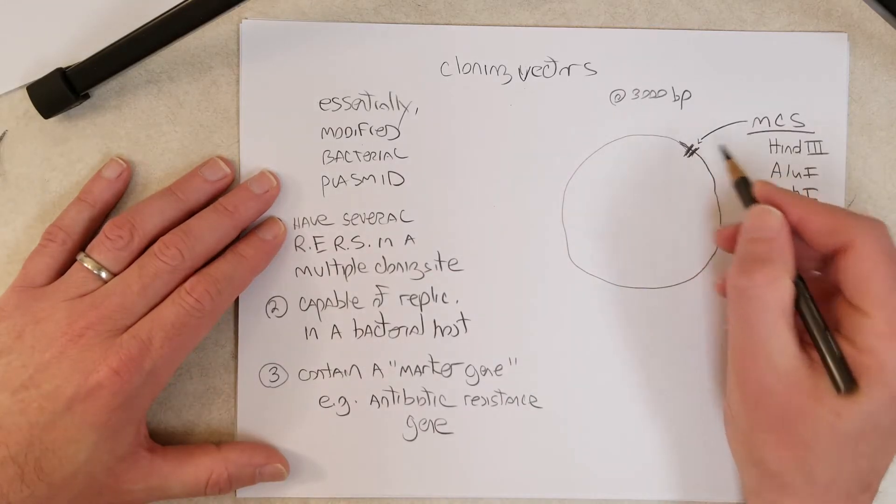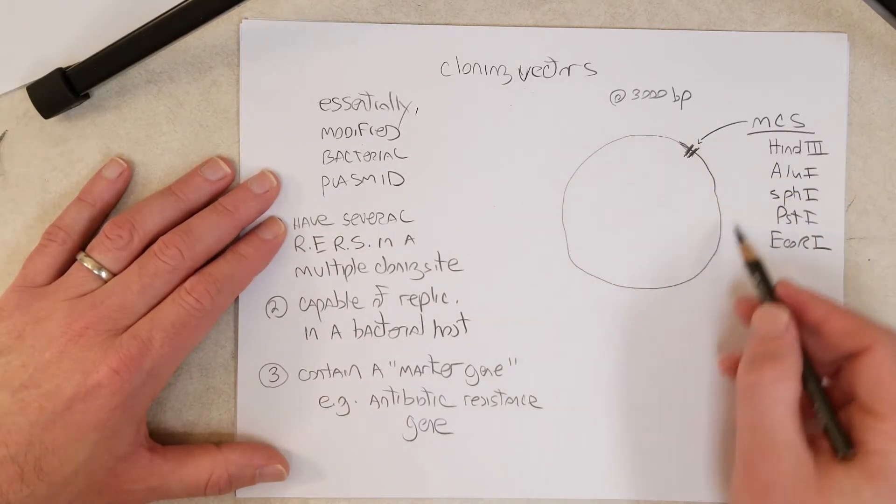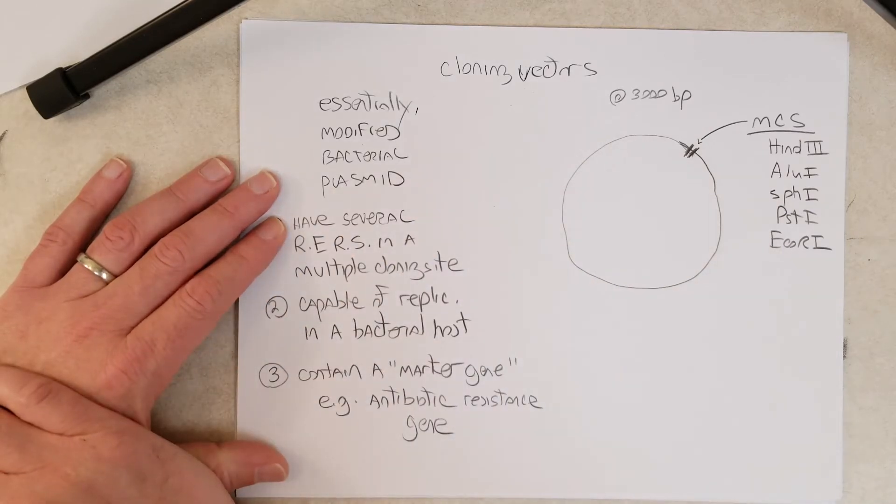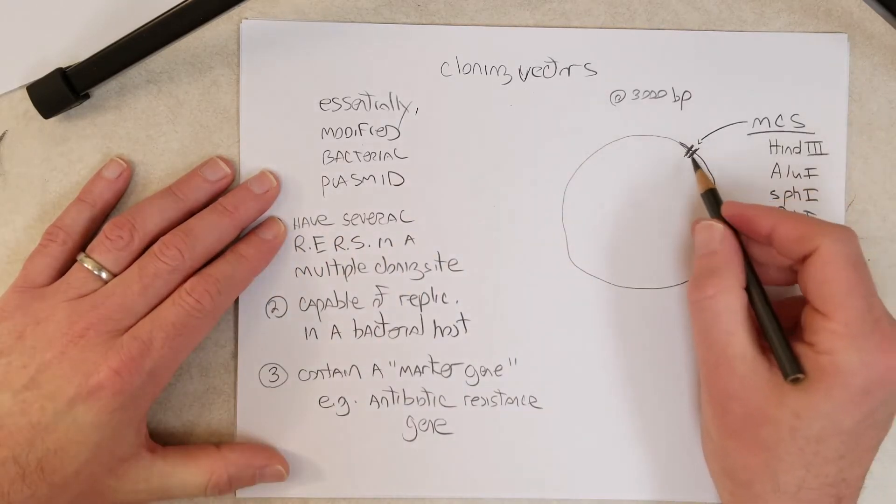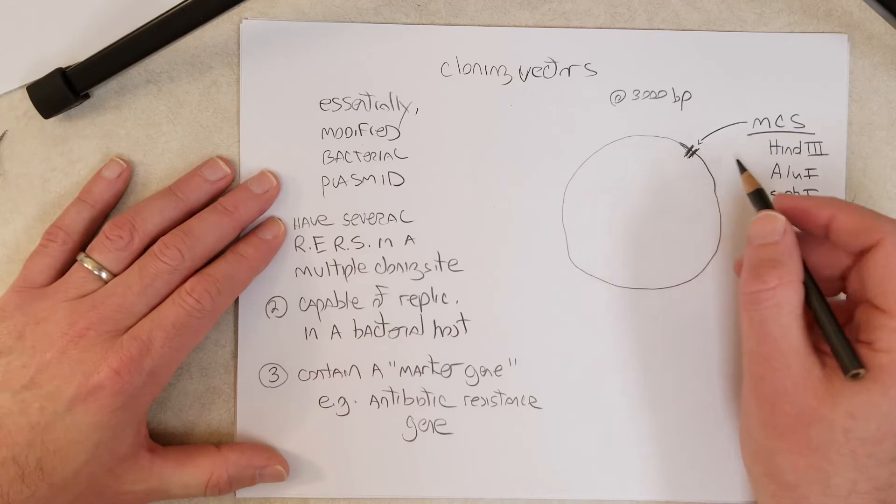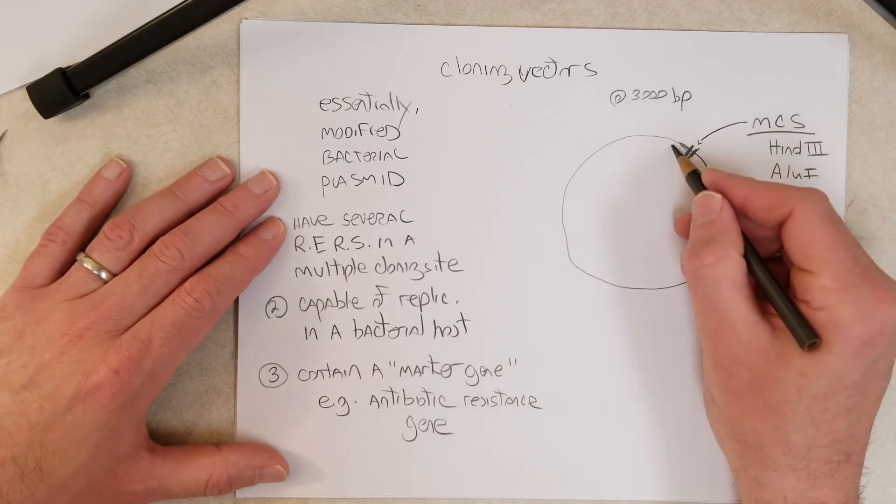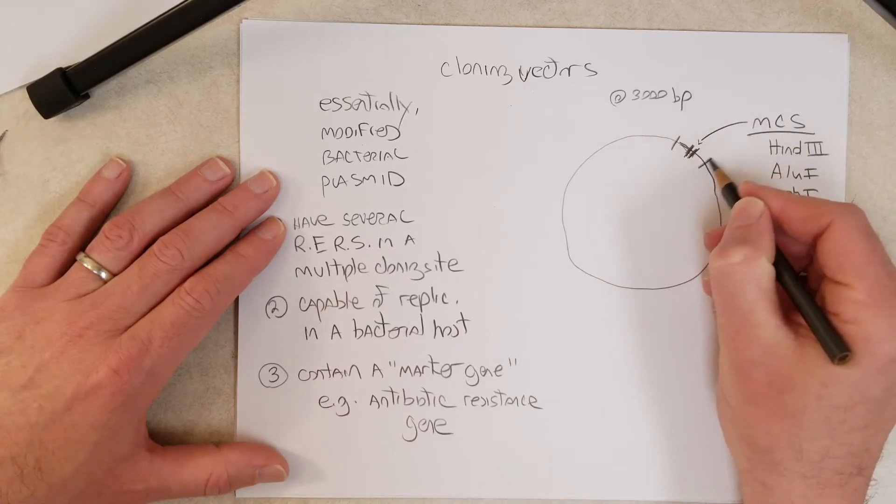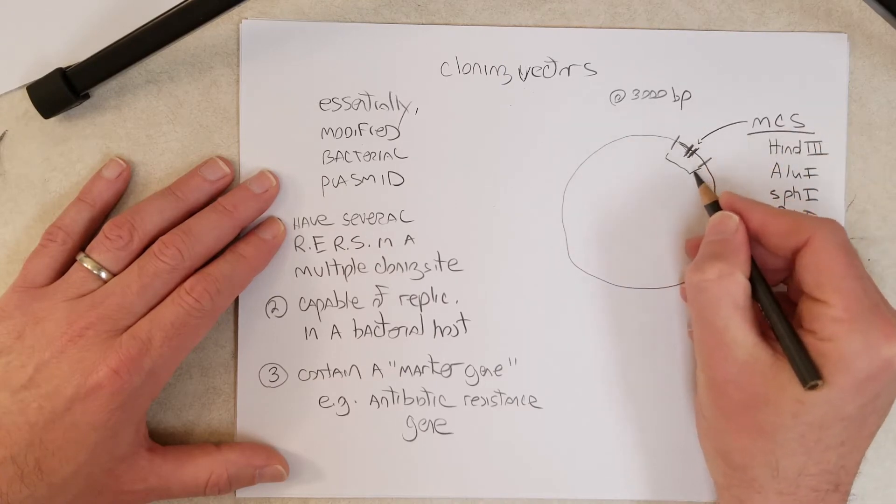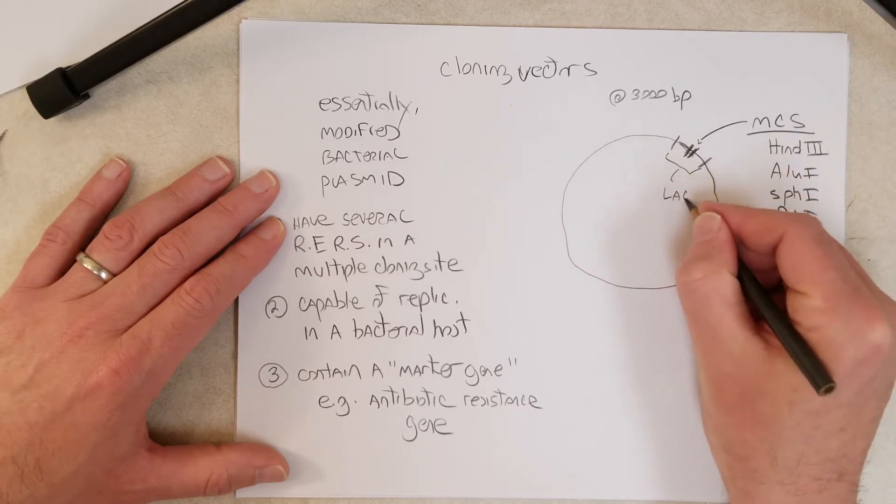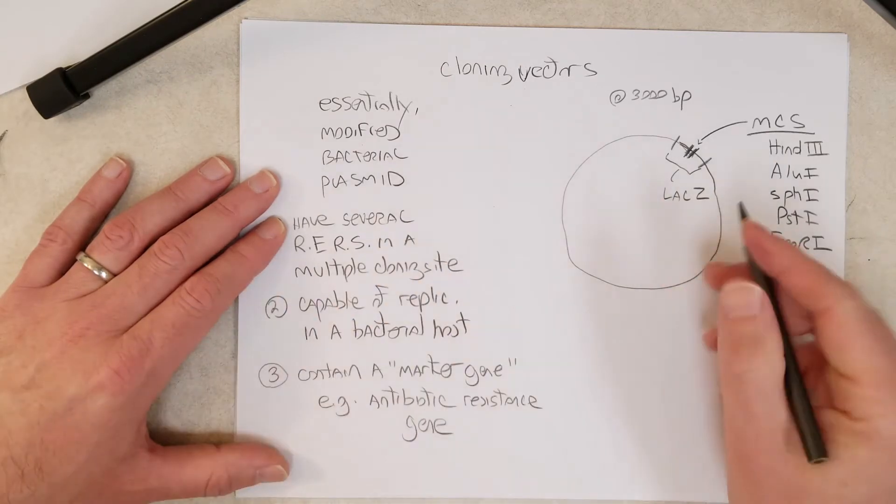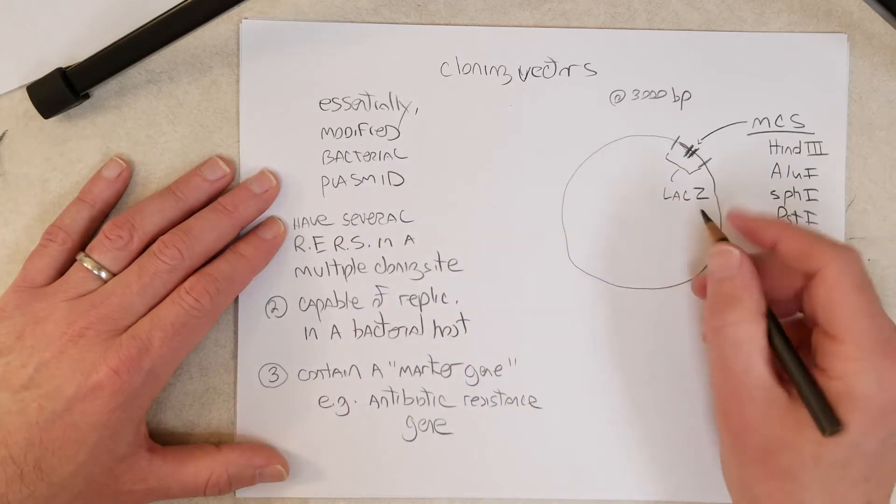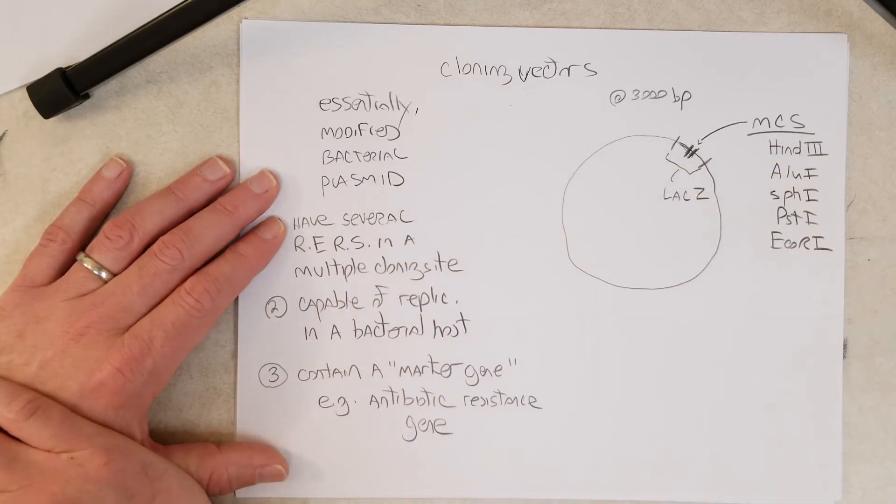Now, on either side, and this is a double-stranded DNA molecule, you can't tell because I only diagrammed a circle there. But on either side of the multiple cloning site, or the multiple cloning site is nested within a gene, often nested within a gene such as LAC-Z. And many of you might remember, LAC-Z encodes beta-galactosidase, which metabolizes lactose into glucose and galactose.